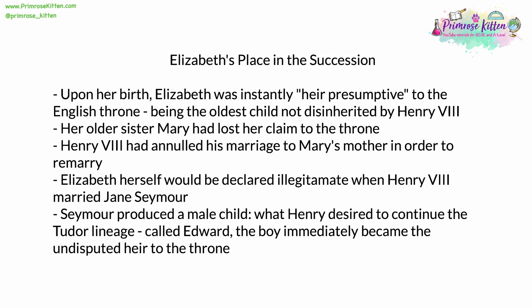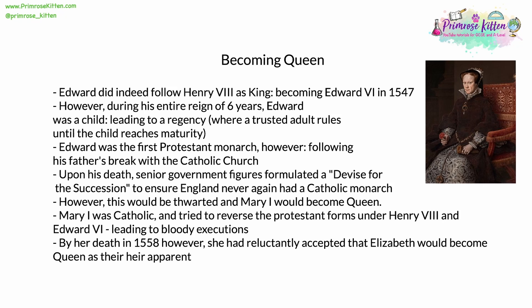The boy, immediately on his birth, became the undisputed and undisputable heir to the throne, and replaced Elizabeth as the heir presumptive to the throne of England. Edward did indeed follow Henry VIII as king, becoming Edward VI in 1547. His reign, however, would only last six years, and during the entirety of this reign Edward was a child, leading to what was and is known as a regency — where a trusted adult rules until the child reaches a mature age, usually 16 or 18. Edward was the first fully Protestant monarch, following Henry VIII's break with the Roman Catholic Church. Upon his death, senior government figures formulated a devise for the succession to ensure that England would never again have a Catholic monarch. However, with Edward VI's early death, this would be thwarted.